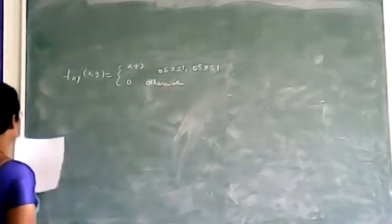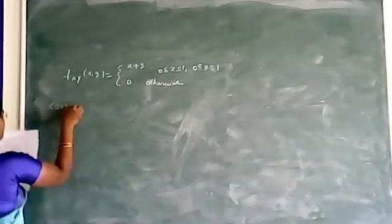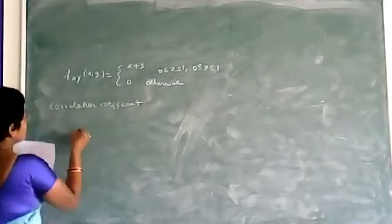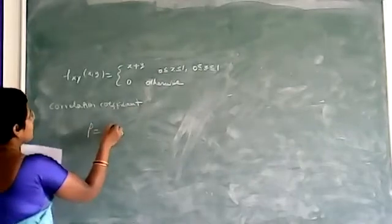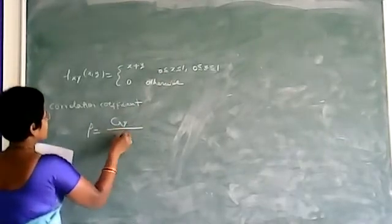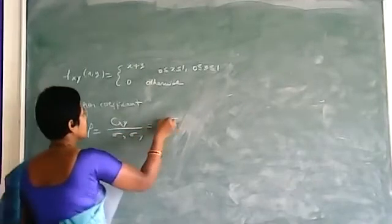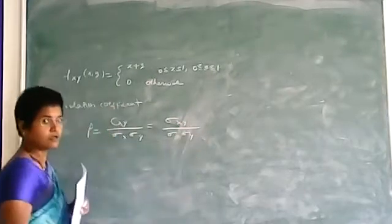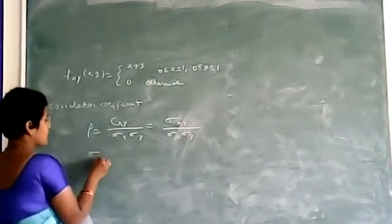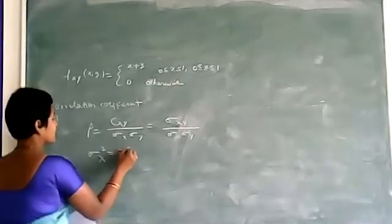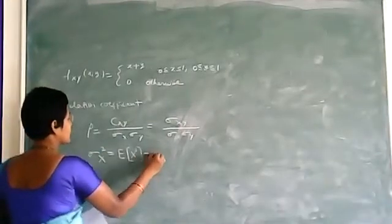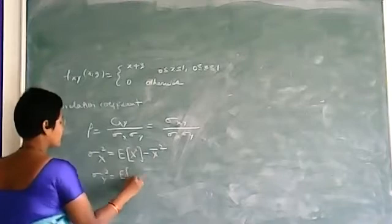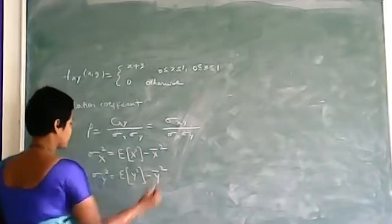They ask you to find out the correlation coefficient. So what is the correlation coefficient rho? Rho is equal to C(x,y) divided by sigma_x times sigma_y — you can also write it as sigma_xy divided by sigma_x times sigma_y.